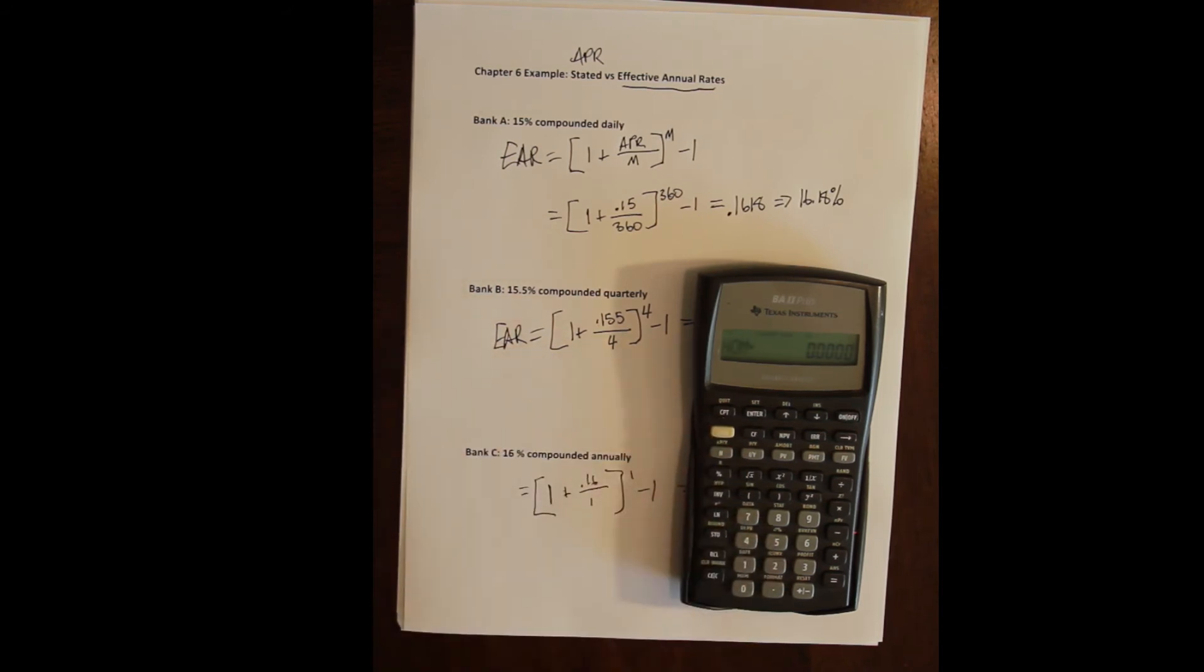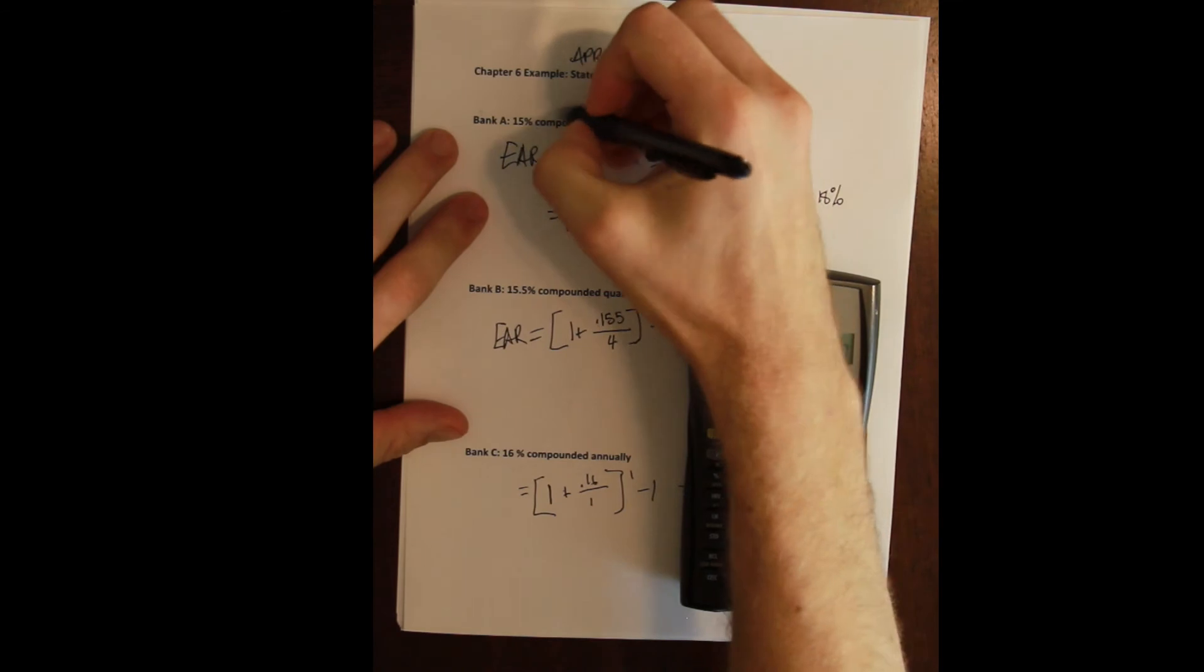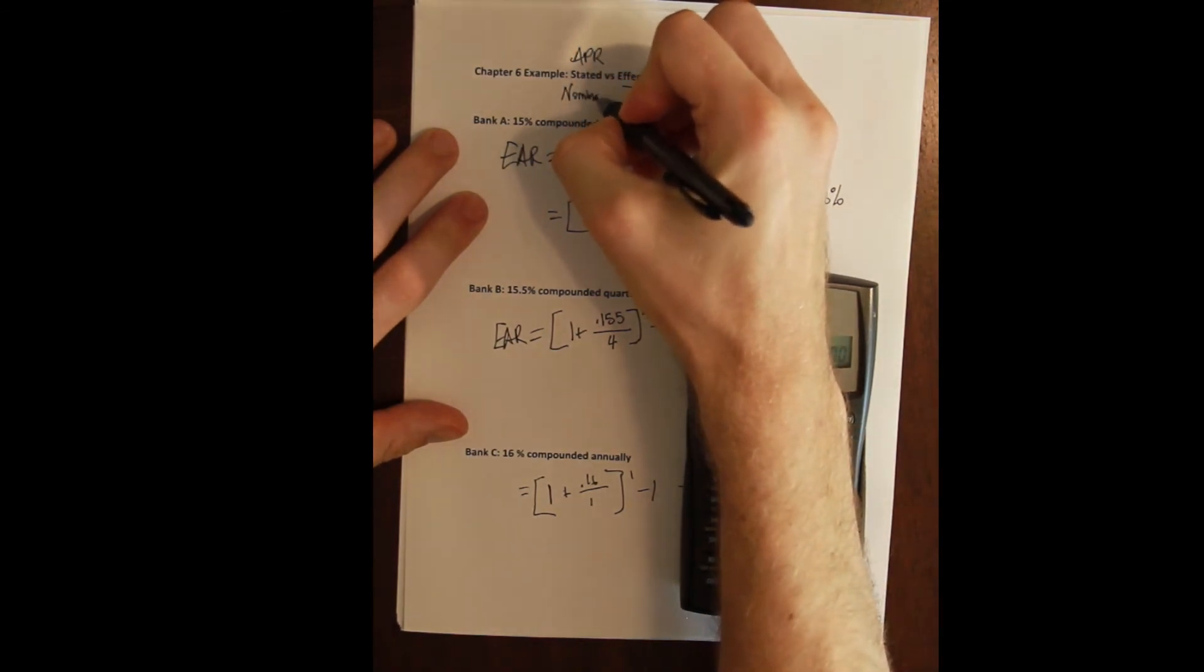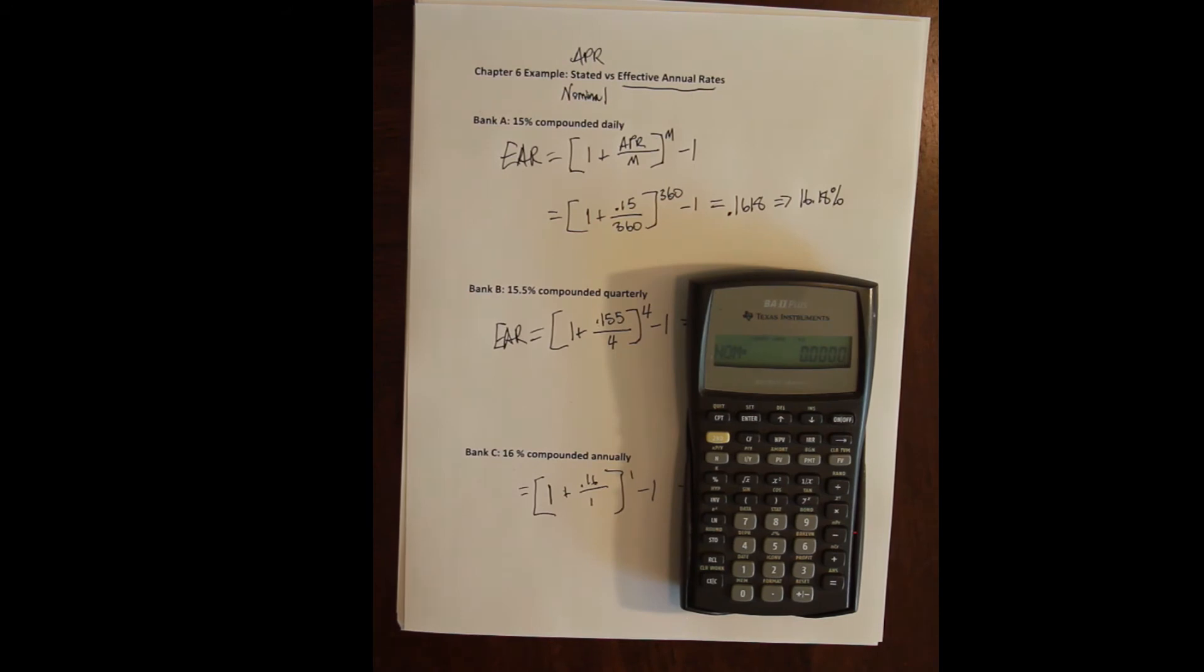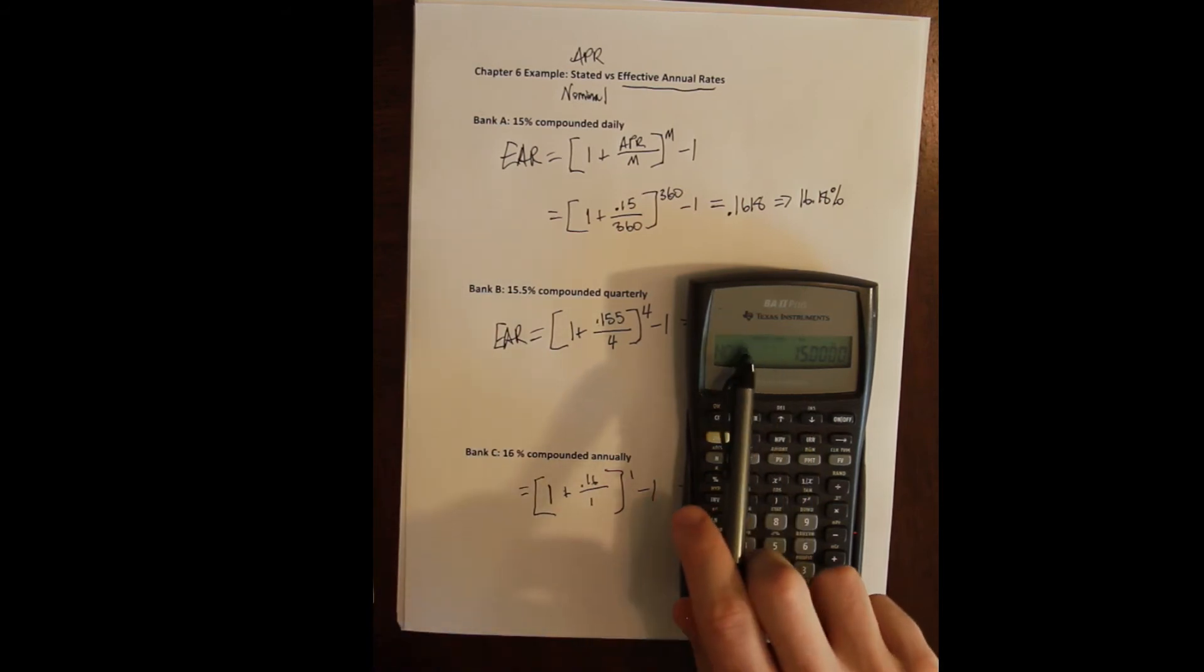Now we're in the interest conversion environment. The first thing you'll see is NOM equals 0.0000. NOM stands for the nominal rate, which is another word for the stated rate or the APR. Finance has lots of different names for the same thing, and that's unfortunately part of this class. The nominal rate is the APR, the stated rate listed right here, and we just go ahead and plug it in as a percentage like everything else in the calculator at 15%.